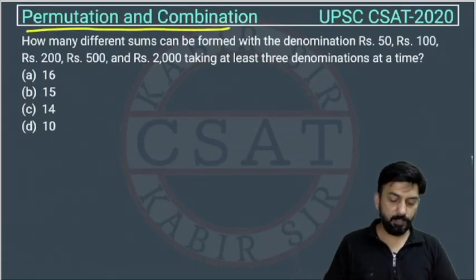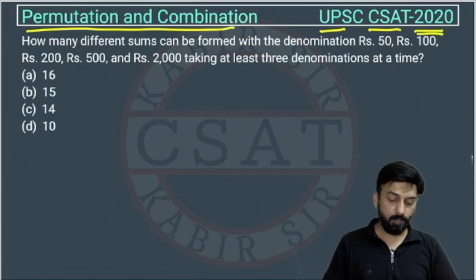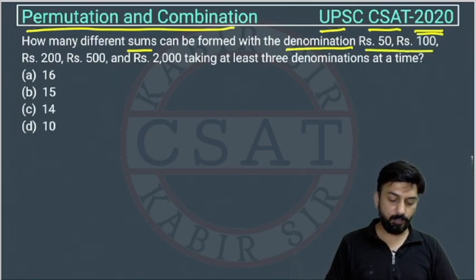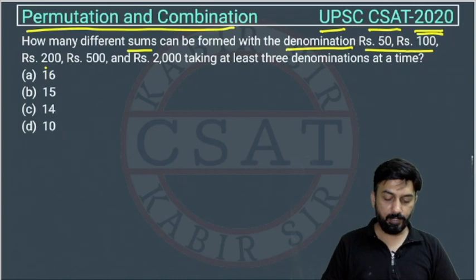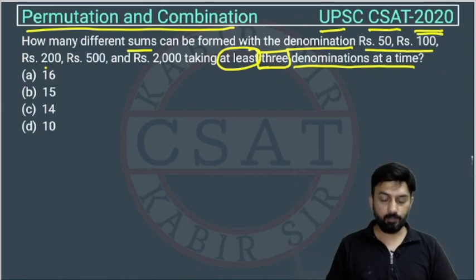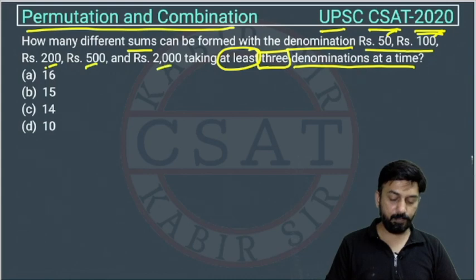This is a question from the permutation and combination chapter, asked by UPSC in their CSAT paper of 2020. How many different sums can be formed with the denominations of rupees 50, 100, 200, 500, and 2000, taking at least three denominations at the same time? So how many denominations are we having? First, second, third, fourth, fifth — right, five denominations.